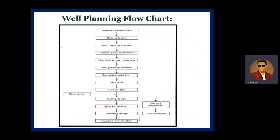The flowchart also includes design of tubing, drill string, and drill pipe. The drill string is the assembly composed of drill pipe, drill collars, bottom hole assembly, stabilizers, reamers, and centralizers, while the drill pipe circulates drilling fluid from the surface to the bottom hole assembly and back. Rig size and selection is then based on the above parameters. Finally, predicted drill time — such as 45 or 60 days — and the final cost estimation complete the well planning flowchart.